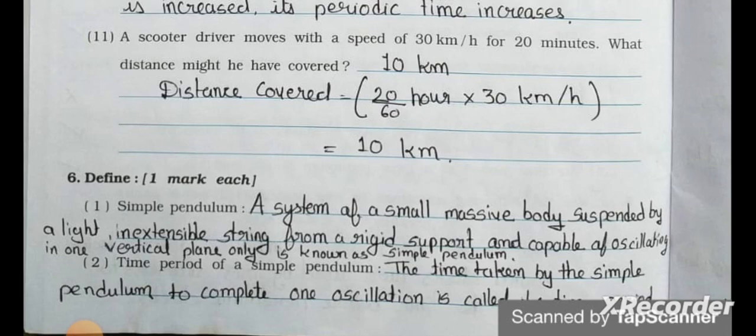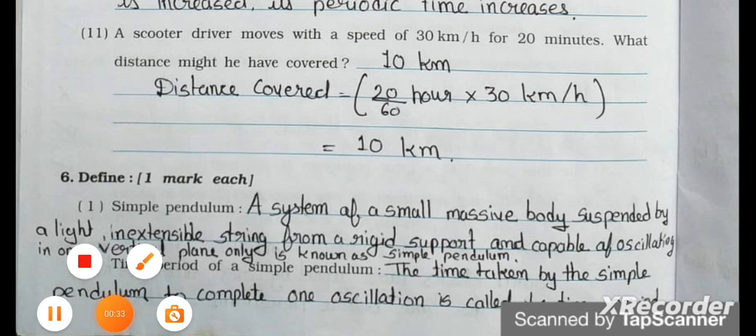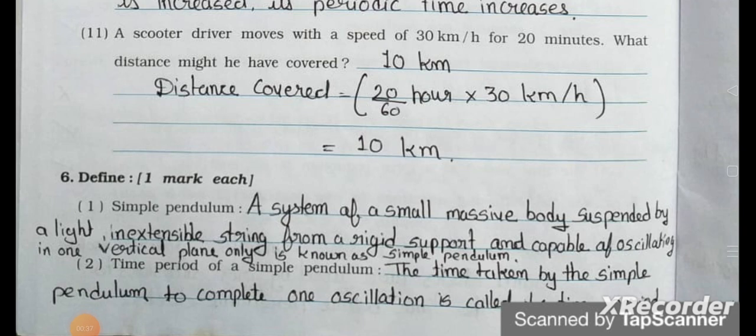Number one: Simple pendulum. Answer — A system of a small massive body suspended by a light, inextensible string from a rigid support and capable of oscillating in one vertical plane only is known as a simple pendulum. Number two: Time period of a simple pendulum.